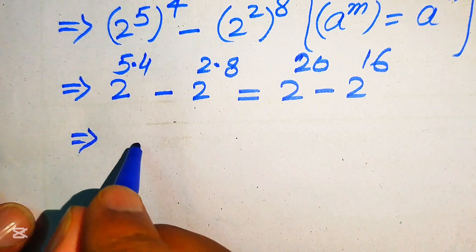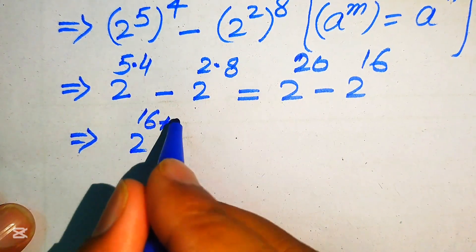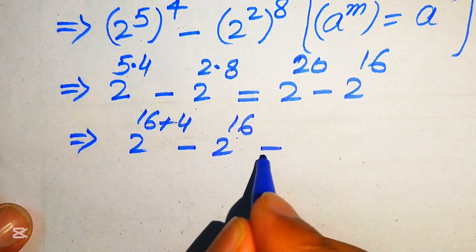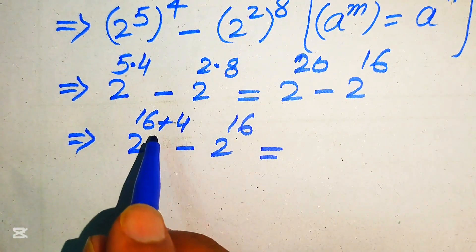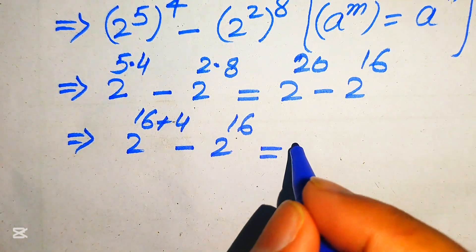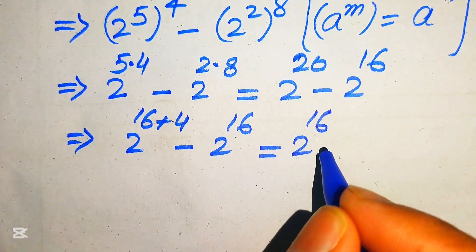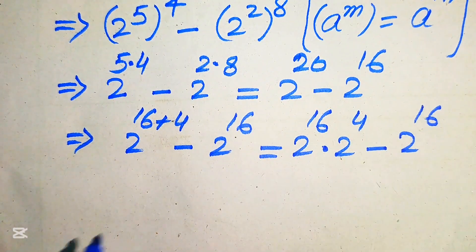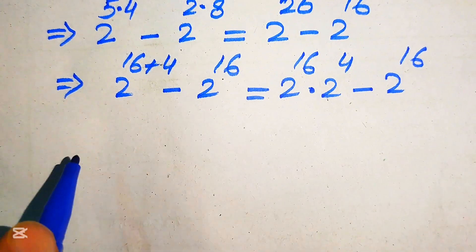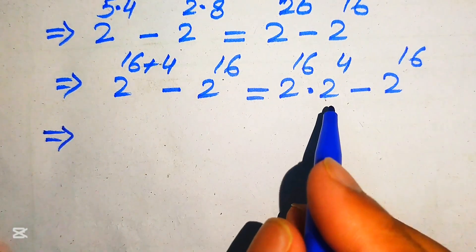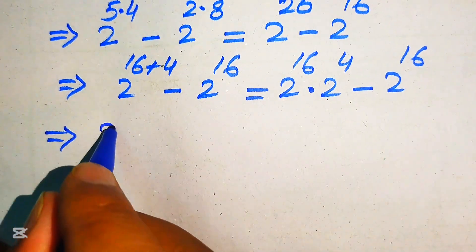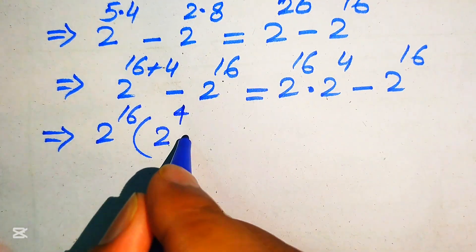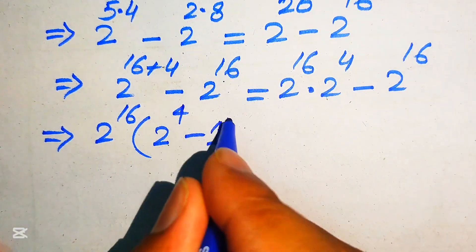We break 2 to the power of 20 as 2 to the power of 16 plus 4. This allows us to write it as 2 to the power of 16 multiplied by 2 to the power of 4, minus 2 to the power of 16. Then we take 2 to the power of 16 as a common factor, leaving 2 to the power of 4 minus 1.